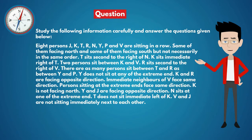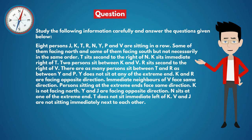Some of them facing north and some of them facing south, but not necessarily in the same order. T sits second to the right of N. K sits immediate right of T. 2 persons sit between K and V. R sits second to the right of V. There are as many persons sit between T and R as between Y and P. Y does not sit at any of the extreme end. K and R are facing opposite direction. Immediate neighbors of V face same direction. Persons sitting at the extreme ends face same direction. K is not facing north.